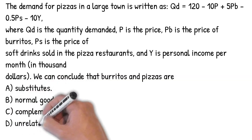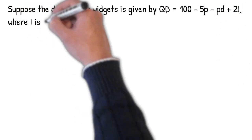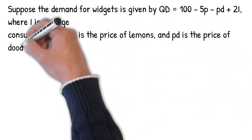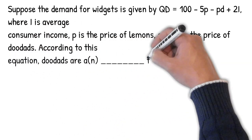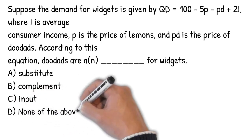When the cross price elasticity of demand is positive, the goods are substitutes. When the cross price elasticity of demand is negative, the goods are complements.